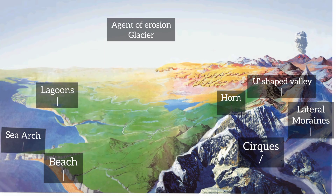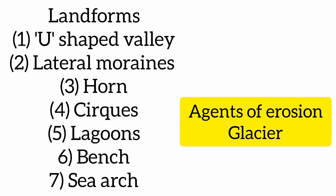Here the agent of erosion shown is a glacier, and the names are highlighted on screen. You have to write the numbers and the corresponding names in your book as per your teacher's instructions.